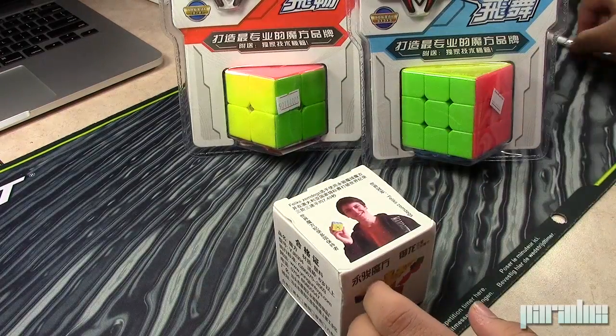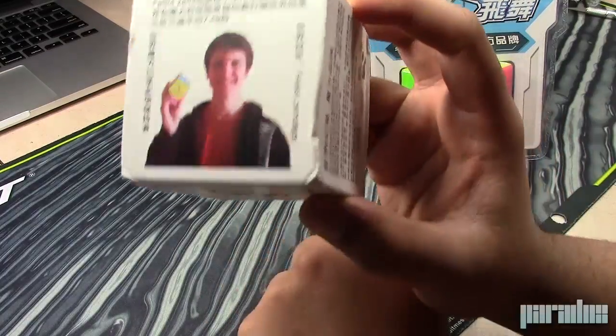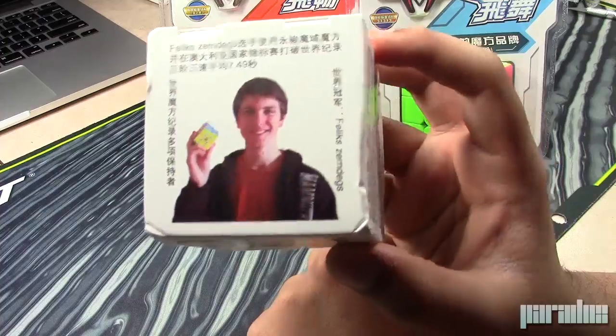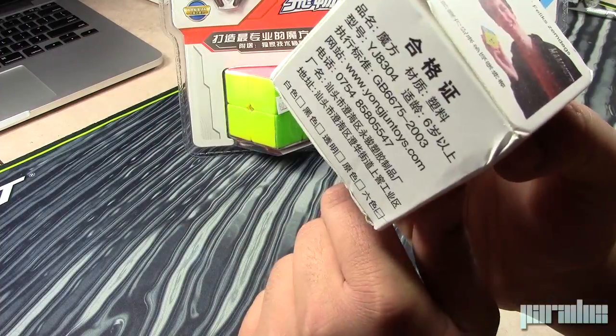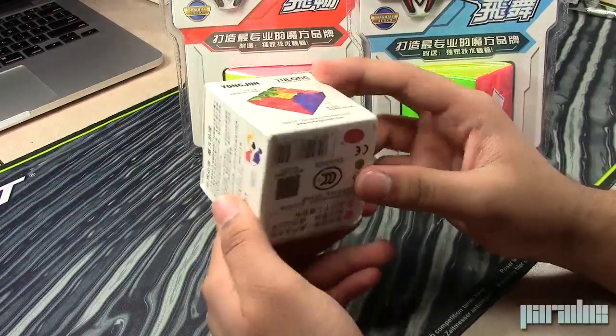Alright, so here it is, the YJ YuLong. Oh look, it has a picture of Felix Zemdegs on it, which is pretty cool. He's holding the YJ YuLong, I think. Or he's just holding a cube.